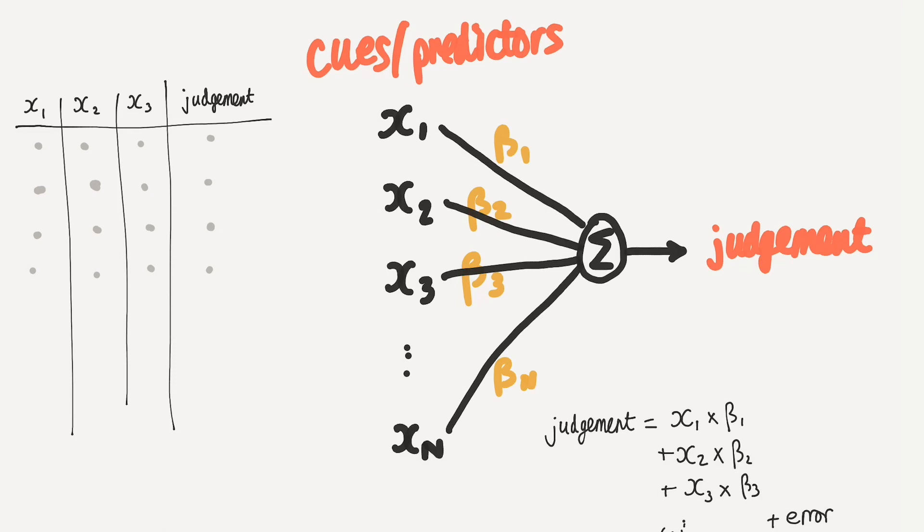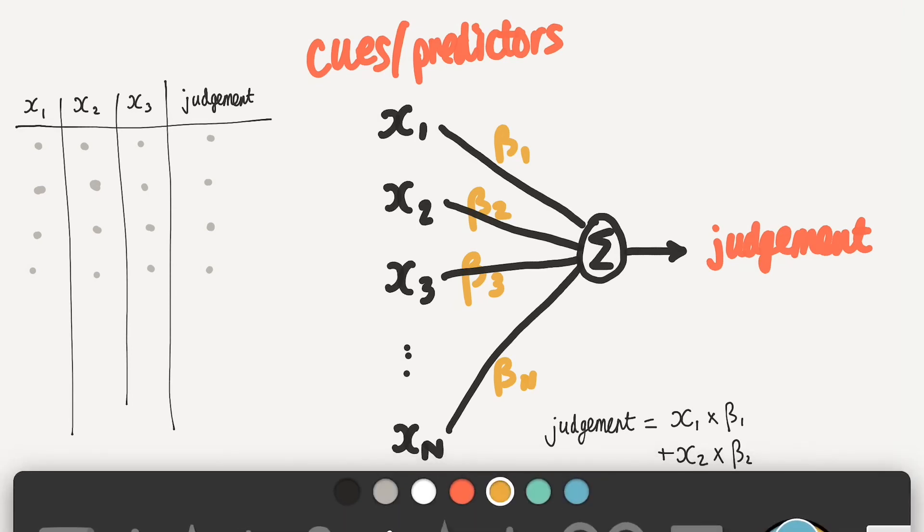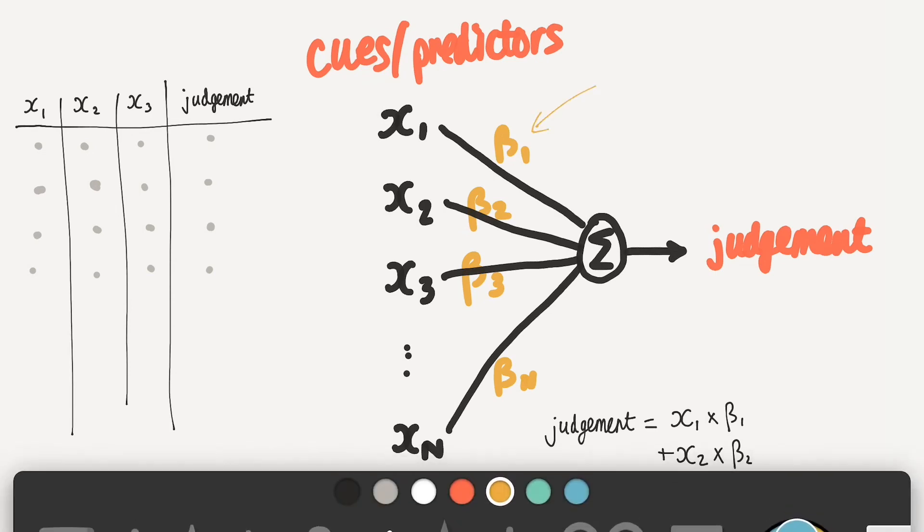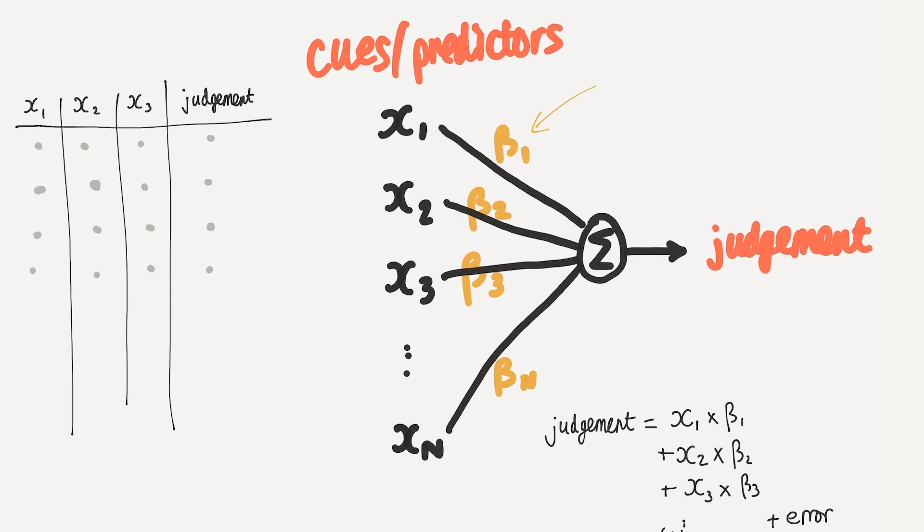But why are we doing this? What does that mean? Well, it tells you how a human judge is actually utilizing the cues. And so what we can do is add another label on here and say, what are these coefficients? In the literature, this is often known as cue-utilization.